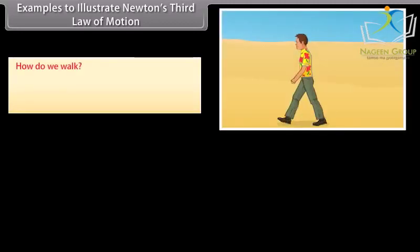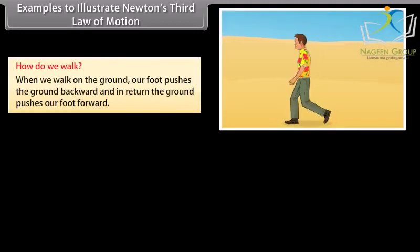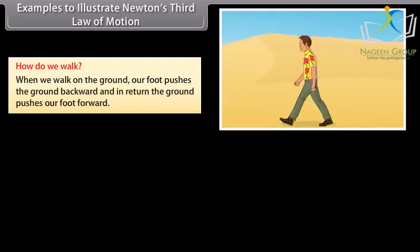How do we walk? When we walk on the ground, our foot pushes the ground backward and in return, the ground pushes our foot forward.